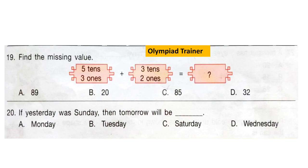Question 20: If yesterday was Sunday, then tomorrow will be dash. Yesterday was Sunday, so today is Monday and tomorrow will be Tuesday. The correct answer is option B: Tuesday.